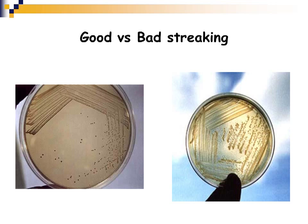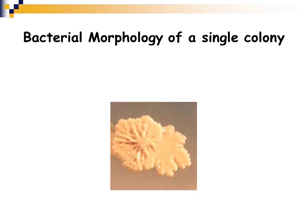Macroscopic morphology involves looking at an agar plate to observe the different characteristics of organisms growing on it. It's important to look at colony morphology in detail — what does the colony look like? Is it dry or moist? Does it have wavy edges? These features can give you an indication of which type of bacteria you might be looking at.